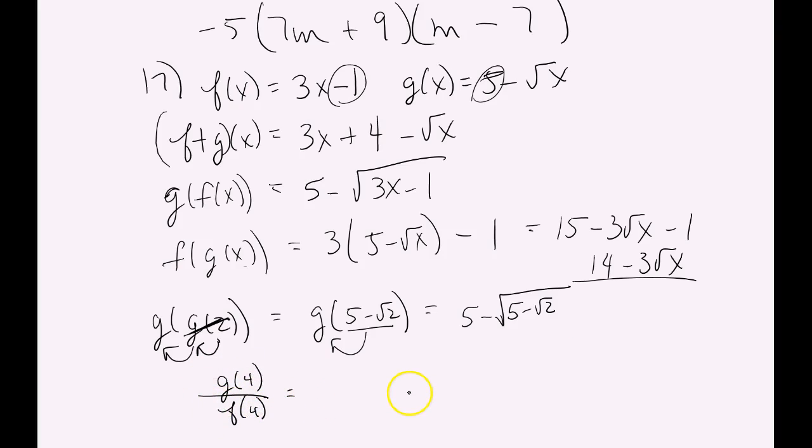And the last one is g of 4 over f of 4. So what this means is we're going to plug 4 into both functions. Then we'll put them together with a division. So g of 4 would be 5 minus root 4. f of 4 would be 3 times 4 minus 1. And now we simplify. That would be a 3 on top, and that would be an 11 in the bottom. So good times. Hopefully, that went pretty well for you. And we'll talk about more interesting kinds of factoring maybe with trig when we do our tutorial.